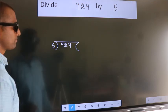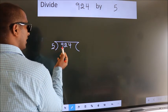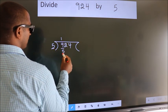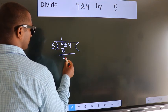Next, here we have 9, here 5. A number close to 9 in the 5 table is 5 once 5. Now, we should subtract. We get 4.